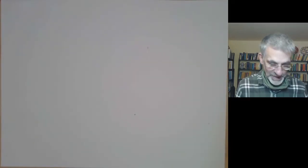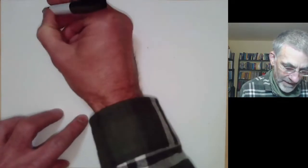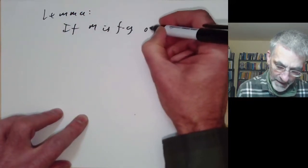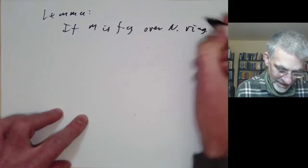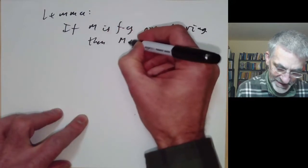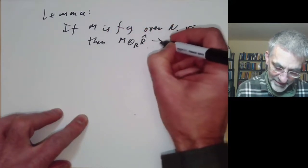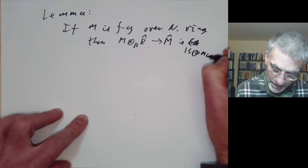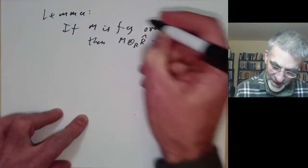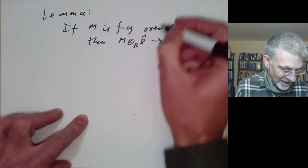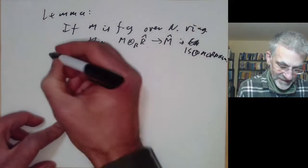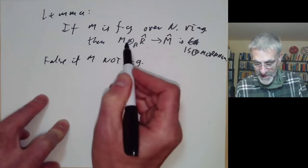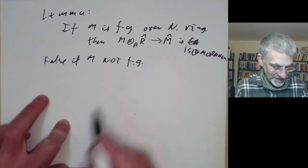The second thing we want to prove is the following lemma: if M is finitely generated over a Noetherian ring, then the natural map M ⊗_R R̂ → M̂ is an isomorphism. We're taking completion with respect to some ideal I. First, note that this is false if M is not finitely generated — the map need not be injective or surjective.